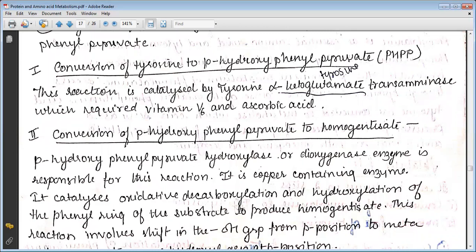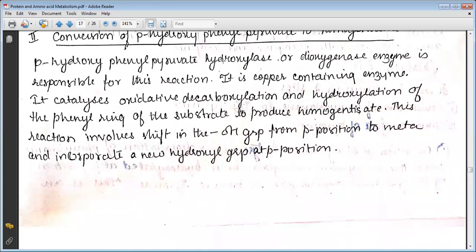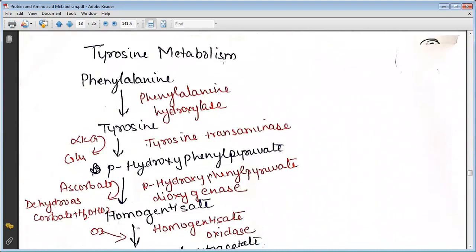Para-hydroxyphenylpyruvate hydroxylase, a dioxygenase enzyme, is responsible for this reaction. It is a copper-containing enzyme. It catalyzes oxidative decarboxylation and hydroxylation of the phenyl ring of the substrate to produce homogentisate. This reaction involves shifting the hydroxyl group from para position to meta and incorporating a new hydroxyl group at para position.